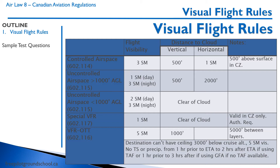In uncontrolled airspace below 1,000 feet, you need two statute miles of visibility during the day or three at night, and you have to be clear of cloud. Three miles visibility is actually very poor — flying VFR in one or two miles and just clear of cloud is not recommended. Special VFR is valid only in control zones and requires authorization from air traffic control. The VFR weather minima for special VFR is one statute mile of visibility and clear of cloud — it's terrible weather, but it applies when you just need to land and get on the ground.